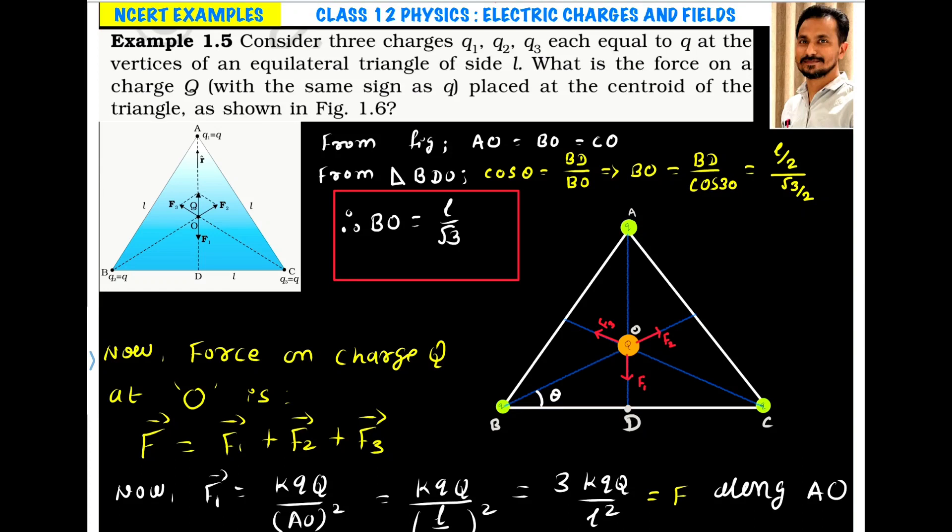Example 1.5. Consider three charges Q1, Q2, Q3, each equal to Q at the vertices of an equilateral triangle of side L. So here we have this triangle A, B and C. It is an equilateral triangle and each side has a length L.